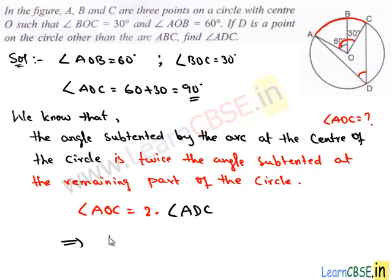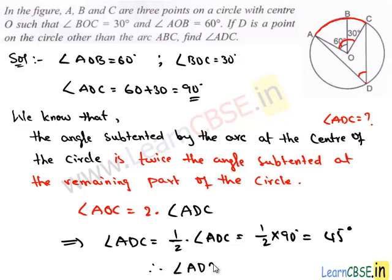So by using this equation we get angle ADC which is half of angle AOC. We have got angle AOC which is 90 degrees, therefore angle ADC is 45 degrees. And this completes our solution.